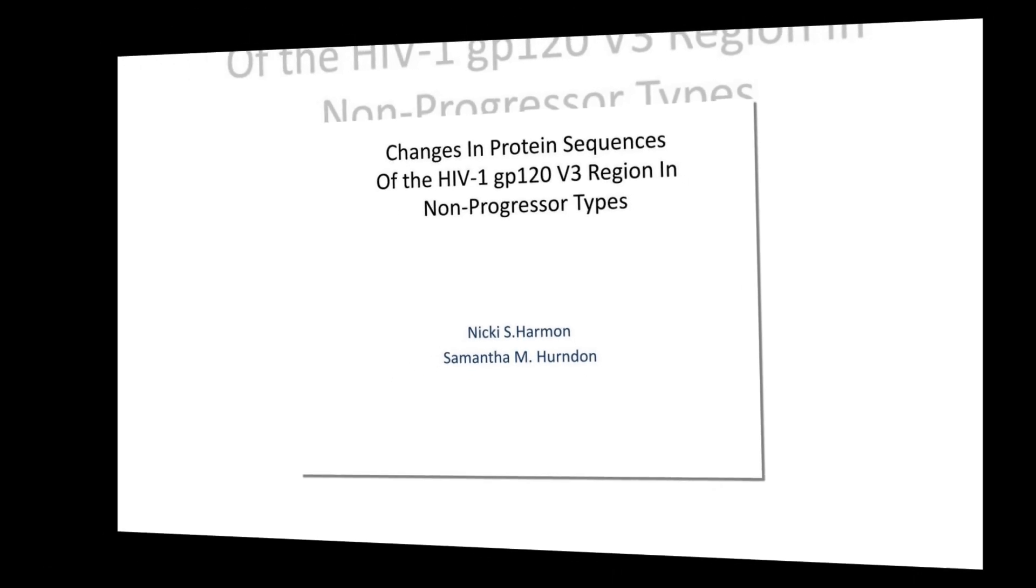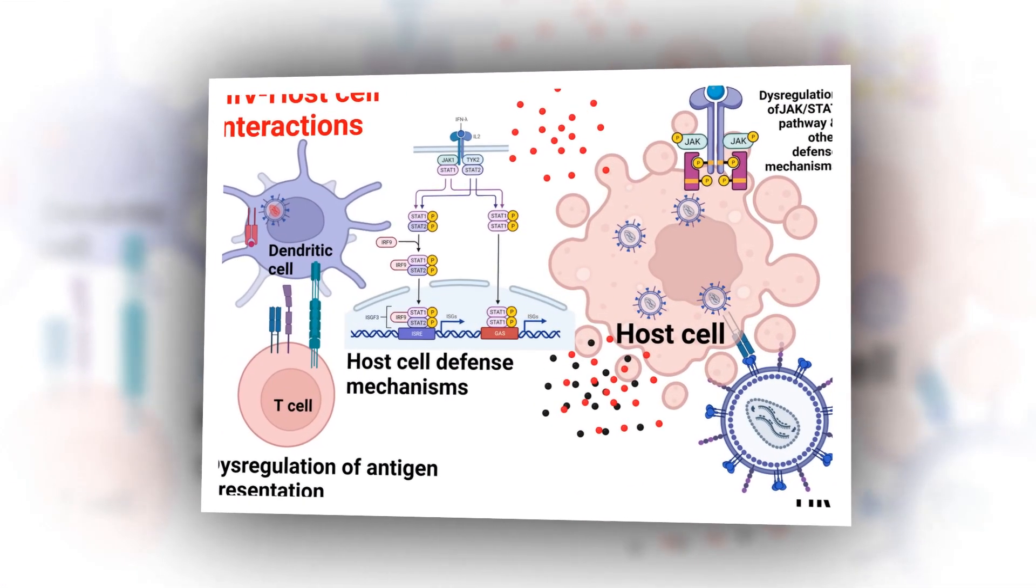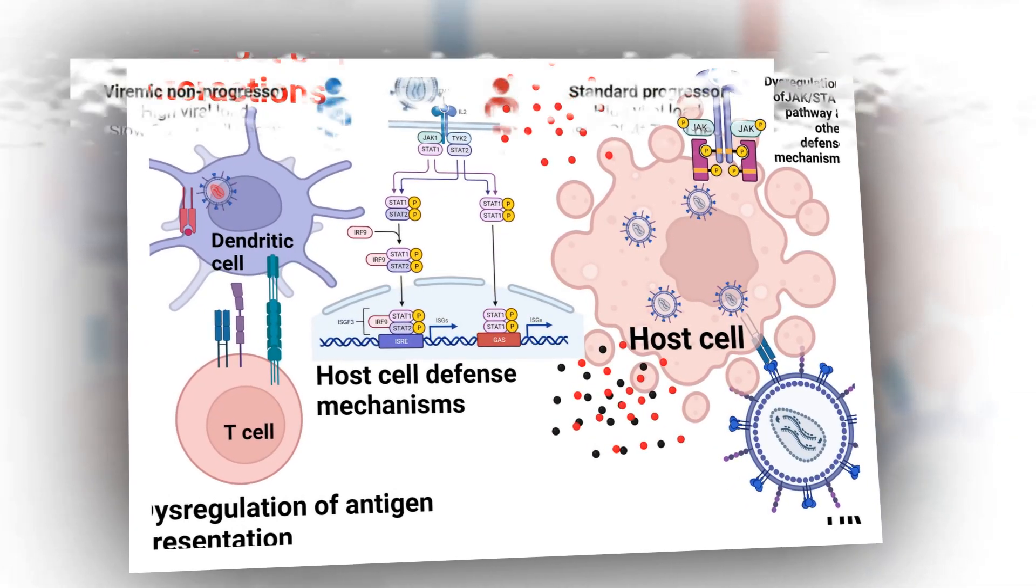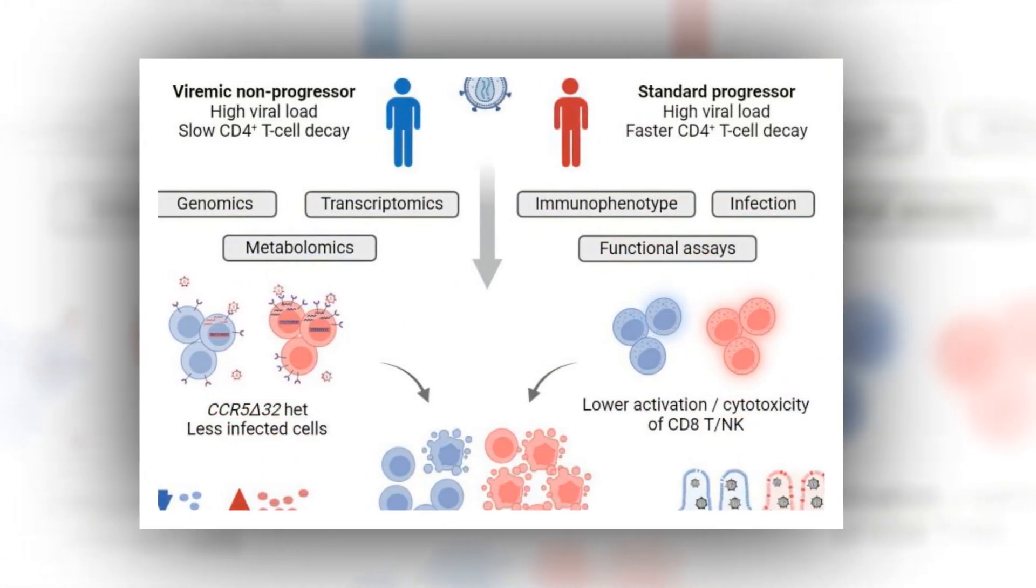In the study, host genetic and immune factors drive evasion of HIV-1 pathogenesis in viremic non-progressors, published in the journal MED, researchers conducted single-cell and multi-omic analysis involving 16 VNPs and 29 progressors.